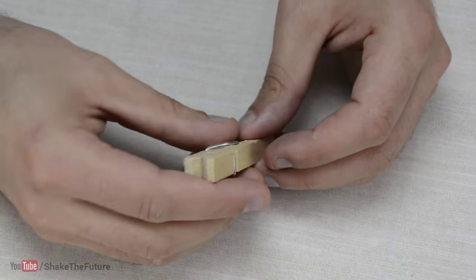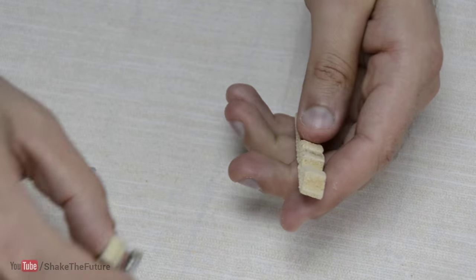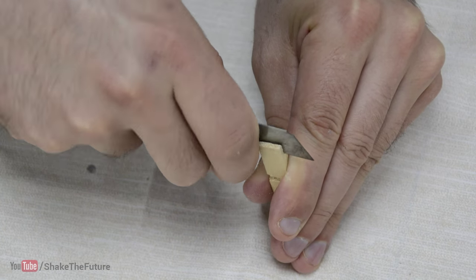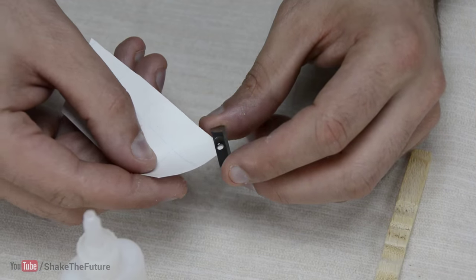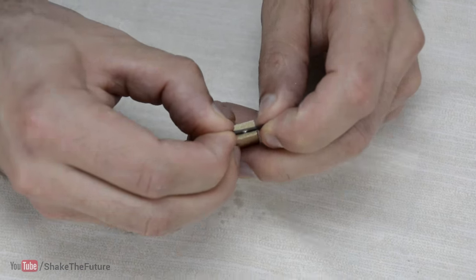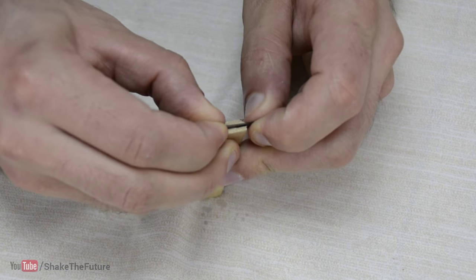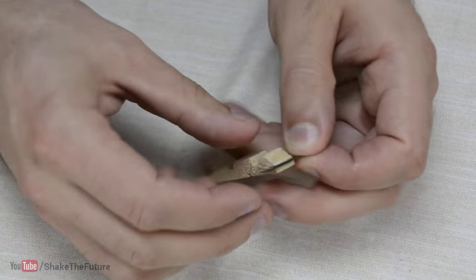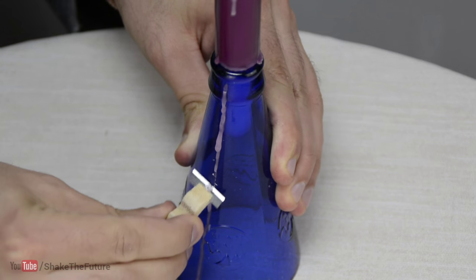After taking off the blade, I took apart the peg. I made a cut in the wood. Then I applied some glue to the blade and put it in the cut. We have made a mini scraper.